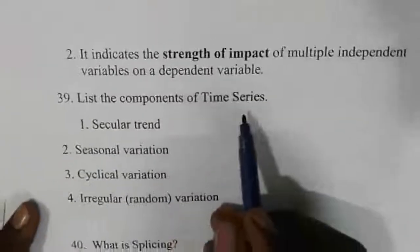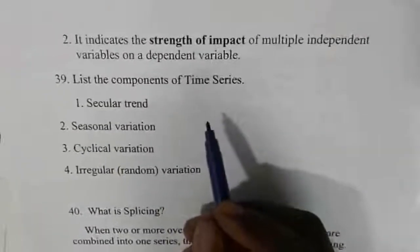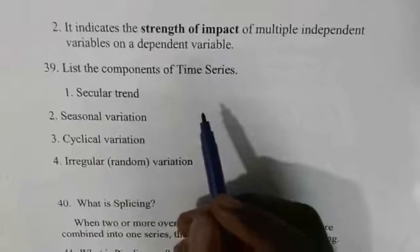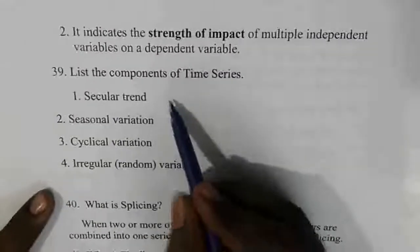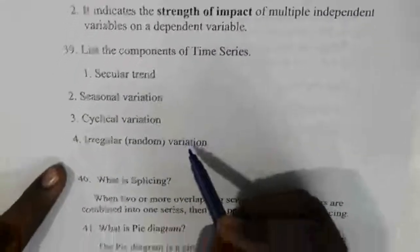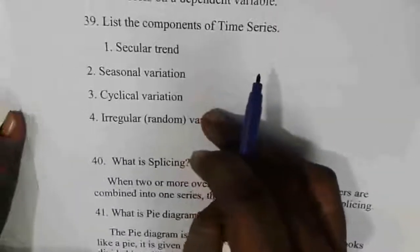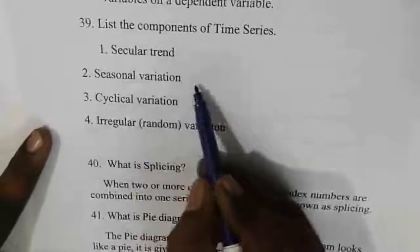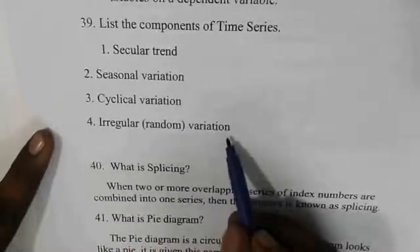List the components of time series. Time series is statistical data arranged in chronological order. There are four components: secular trend, seasonal variation, cyclic variation, and irregular variation.